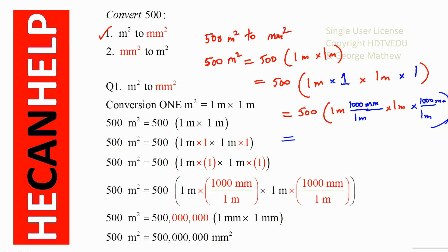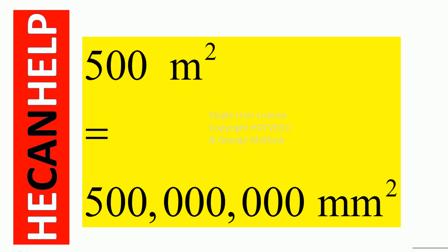So what do we get? 500 times 1000 times 1000 — that gives us 500 million millimeter squared. So 500 meter squared is equal to 500 million millimeter squared.